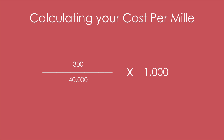For example, say you have $300 in estimated earnings and 40,000 estimated monetized views — those are views with ads on them. Multiply that by 1,000 and you will get $7.50 per thousand monetized views.